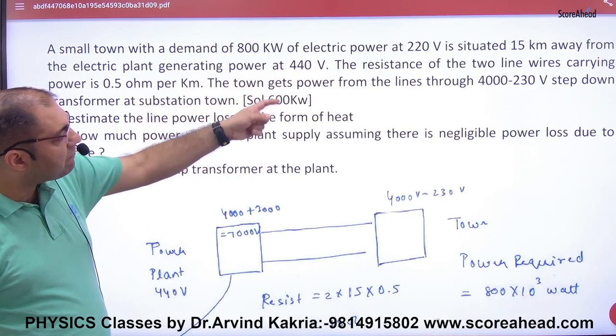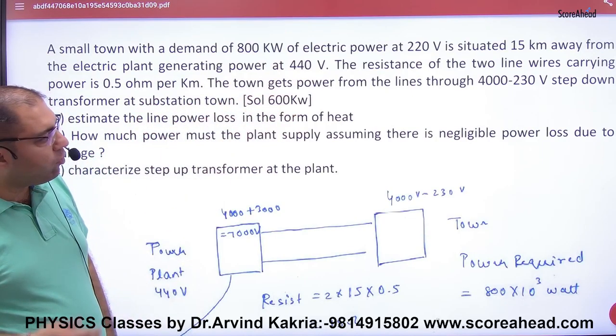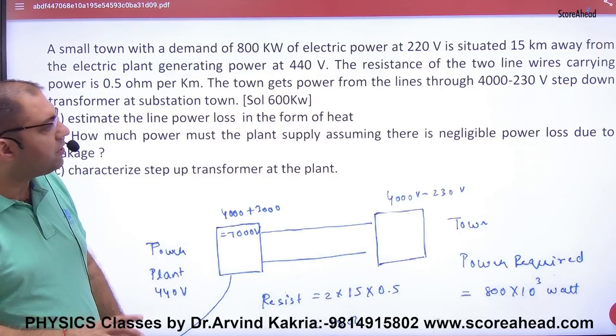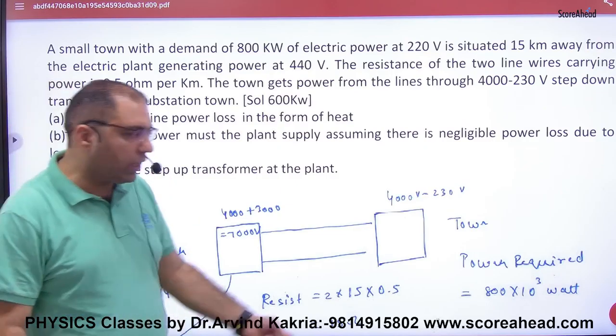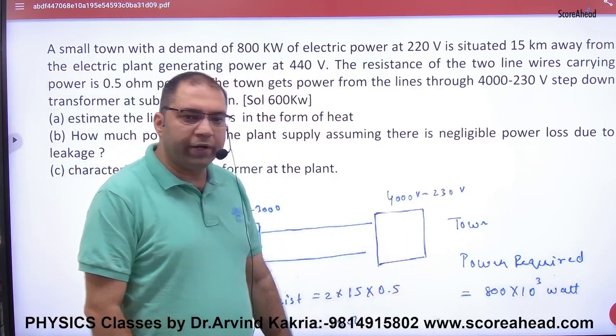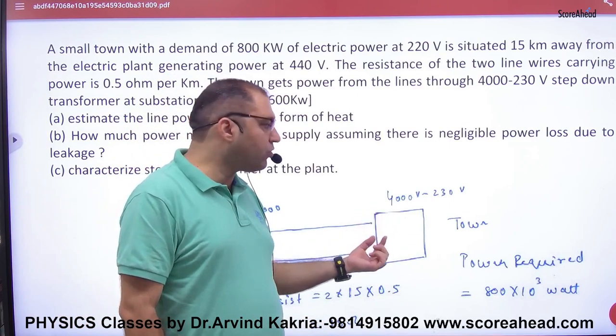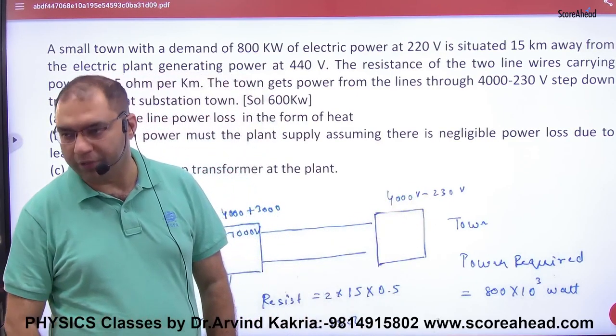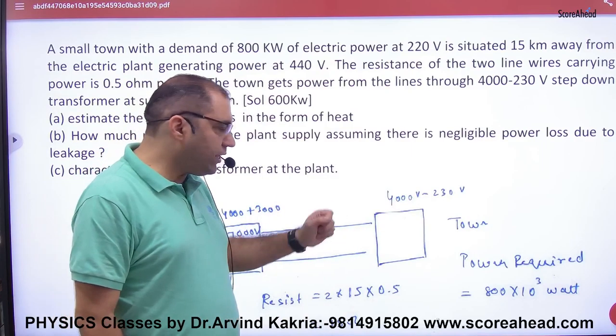Town gets power from a line through 4000 to 230 volt step-down transformer. So town gets transformer 4000 volt to 230 volt.